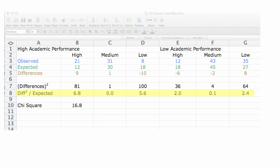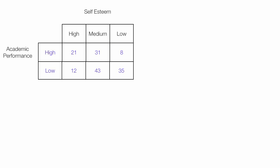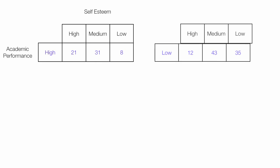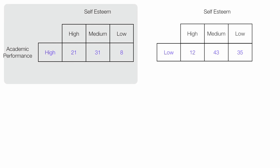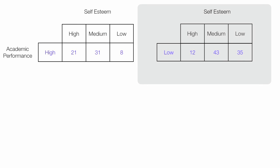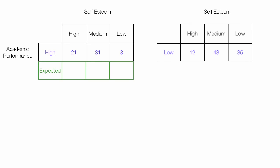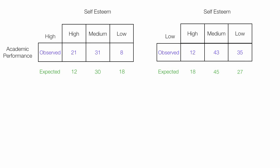You can use Excel to calculate Chi-Square. I'm going to use a table, and a two-way means I have at least two rows. In this table, I have academic performance, high and low. I'm going to make two separate tables instead — this will make your calculation much easier. I have a table for high academic performance and self-esteem, and another for low academic performance and self-esteem. I'll put in the expected values, so I ended up with two tables like this.